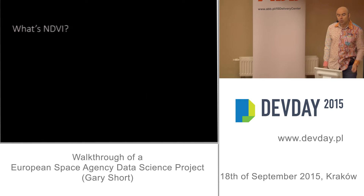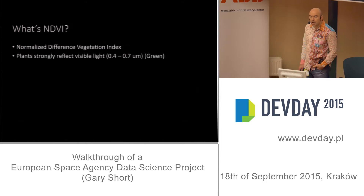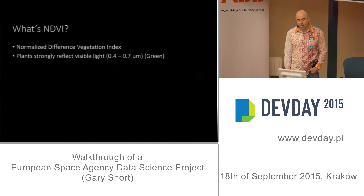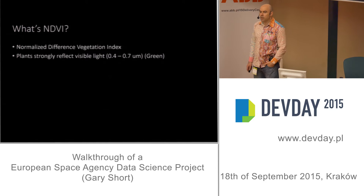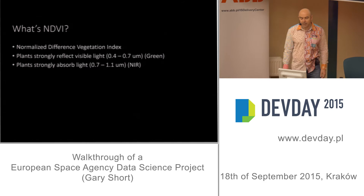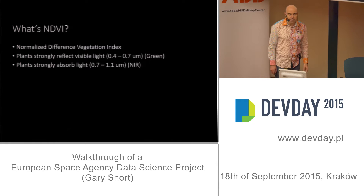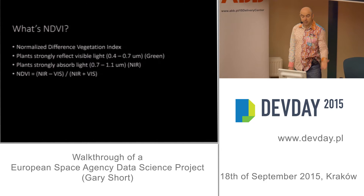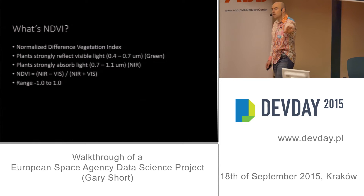NDVI is the Normalized Difference Vegetation Index. Plants strongly reflect visible light in the green wavelength and strongly absorb light in the near-infrared. Using those two wavelengths — one almost completely absorbed, the other almost completely reflected — we can calculate the NDVI: near-infrared minus visible light, divided by near-infrared plus visible light. That gives us a number between minus one and positive one.